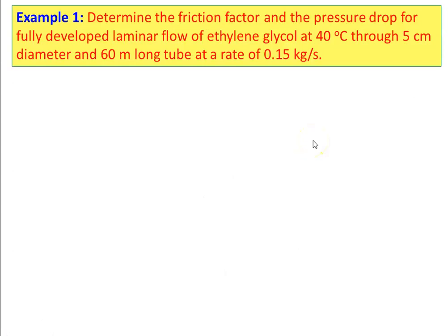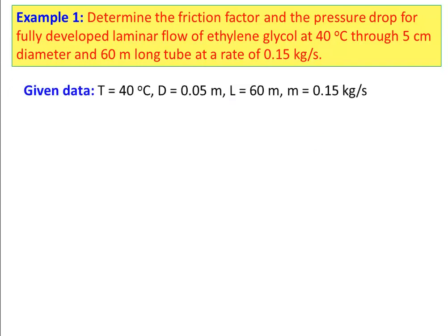Example 1: Determine the friction factor and the pressure drop for fully developed laminar flow of ethylene glycol at 40°C through a 5 cm diameter, 60 meter long tube at a rate of 0.15 kg/s. Given data: temperature = 40°C, diameter = 0.05 m, length = 60 m, mass flow rate = 0.15 kg/s.